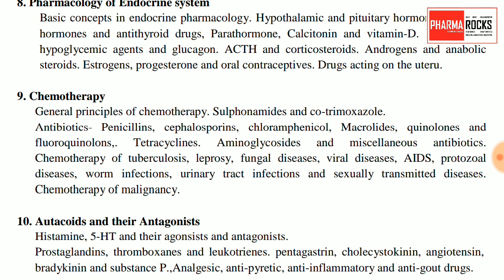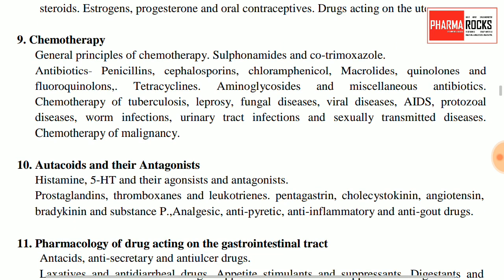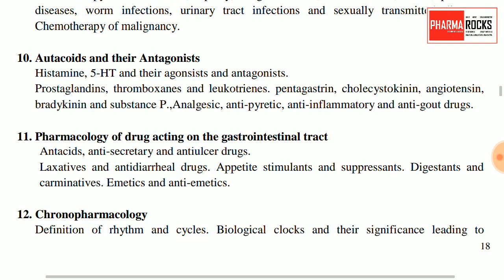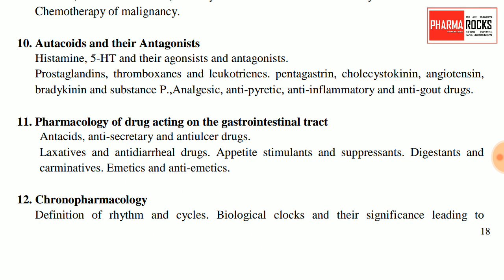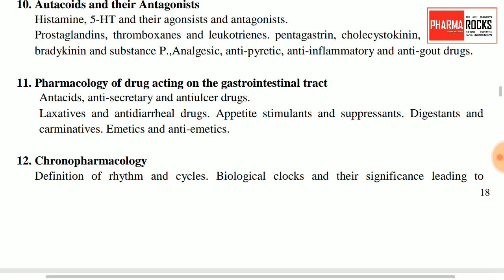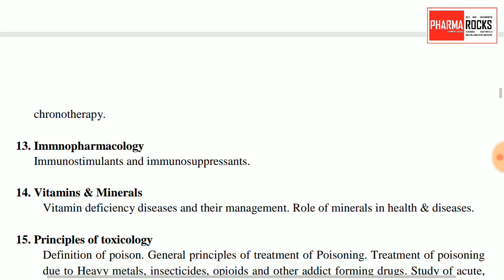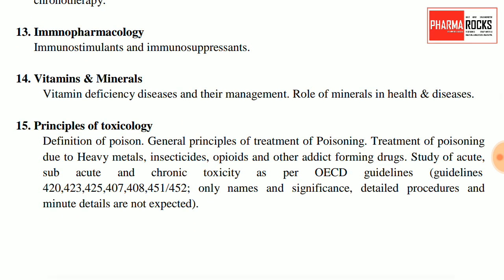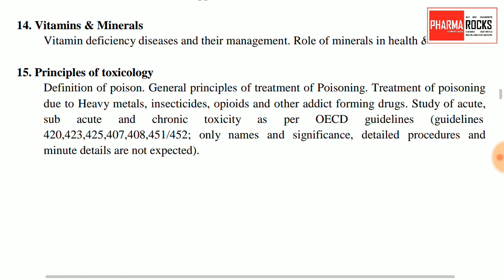Drugs acting on the urinary system, respiratory system, and endocrine system are important. Chemotherapy and the antibiotic portion must be covered. Autacoids and their antagonists, pharmacology of drugs acting on the GI tract, chronopharmacology, and immunopharmacology are important. Topic 14 — vitamins and minerals — has many questions asked about vitamin deficiency diseases, their management, and the role of minerals. Principles of toxicology are also important.